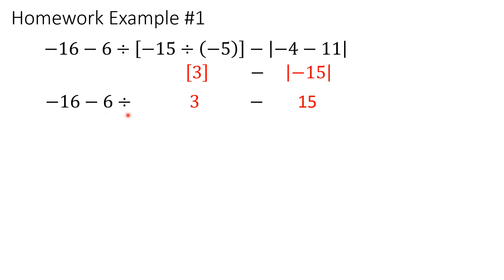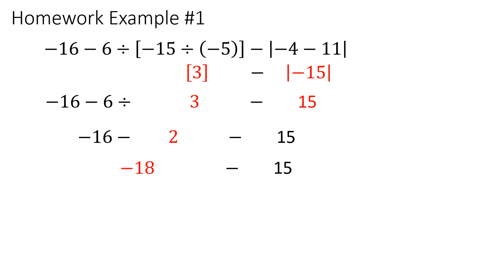We have negative 6 divided by 3, which gives negative 2. We bring down the negative 16 and the minus 15. Now we're ready for addition and subtraction: negative 16 minus 2 minus 15. That gives us negative 18 minus 15, and the final answer is negative 33.